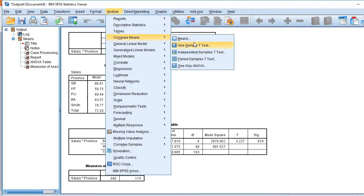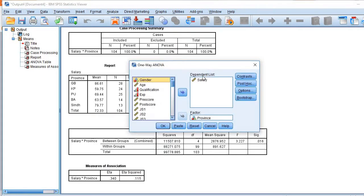Go to analyze, then compare means, and one-way ANOVA. Put salary here in the dependent list, and in factor, put the grouping variable here.